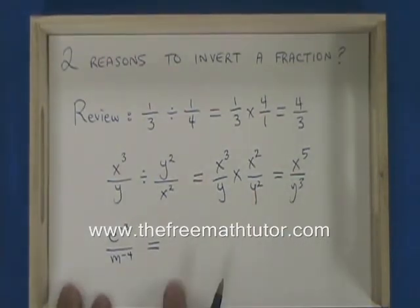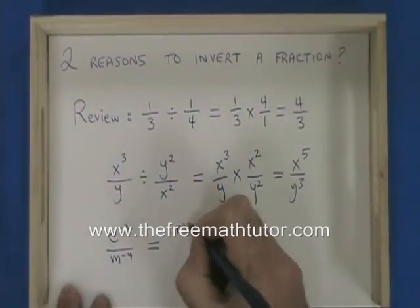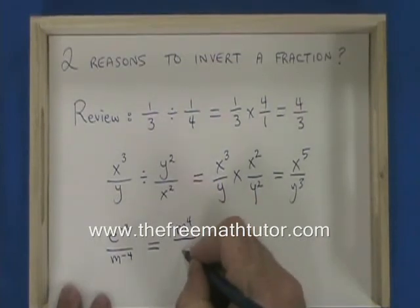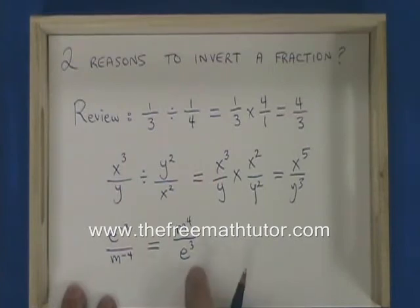But there is a second reason why we can invert a fraction. e to the negative 3 over m to the negative 4 is the same as m to the positive 4 over e to the positive 3. The way that I can recognize that this is the reason I am inverting the fraction is because the signs of the exponents change.